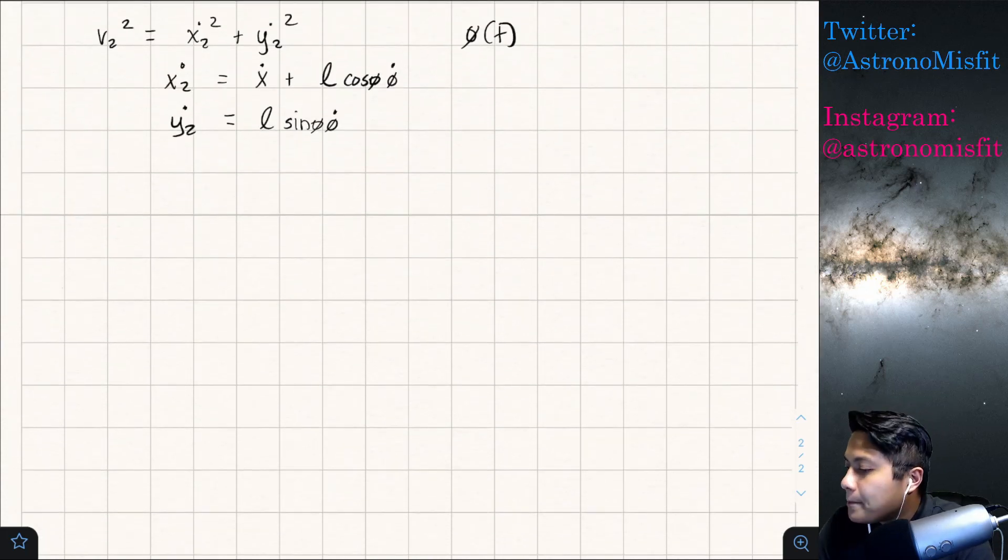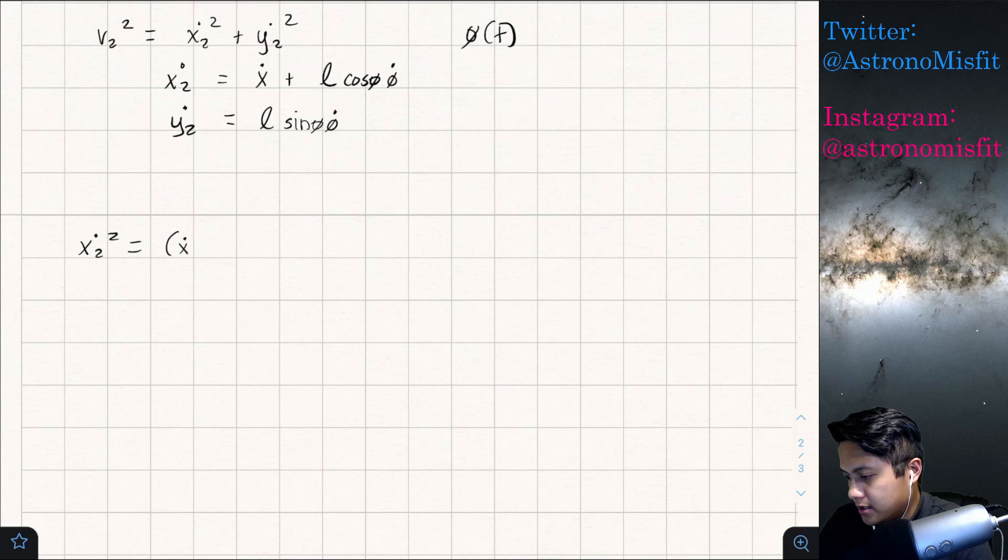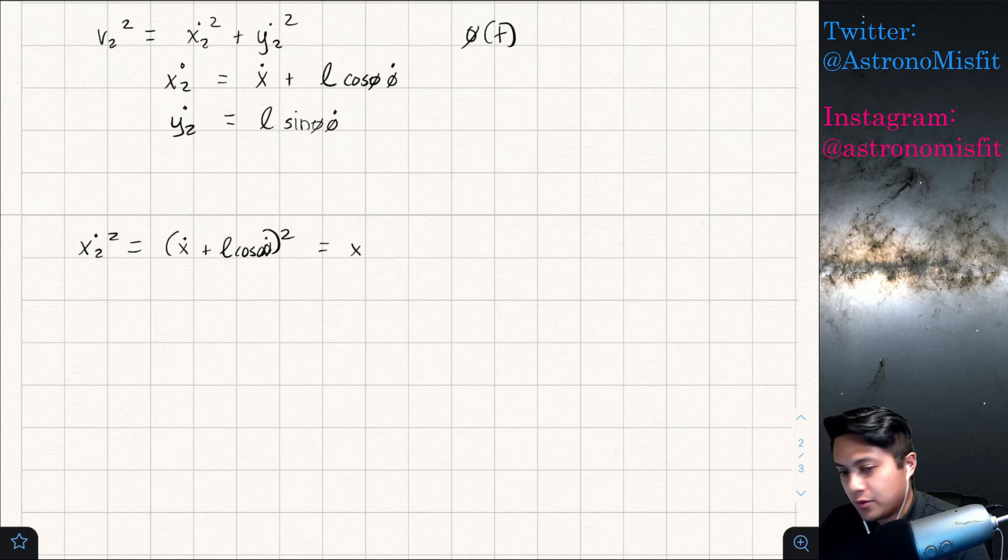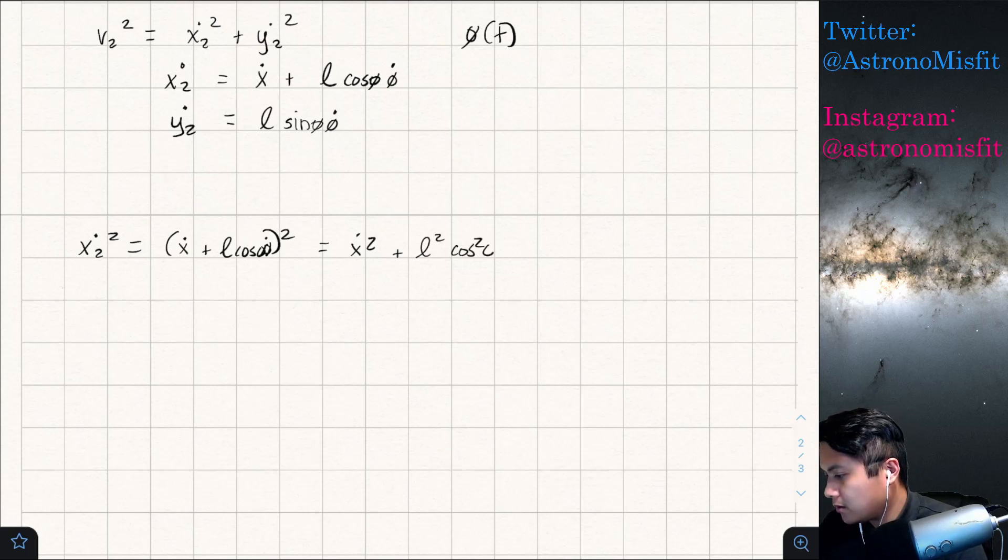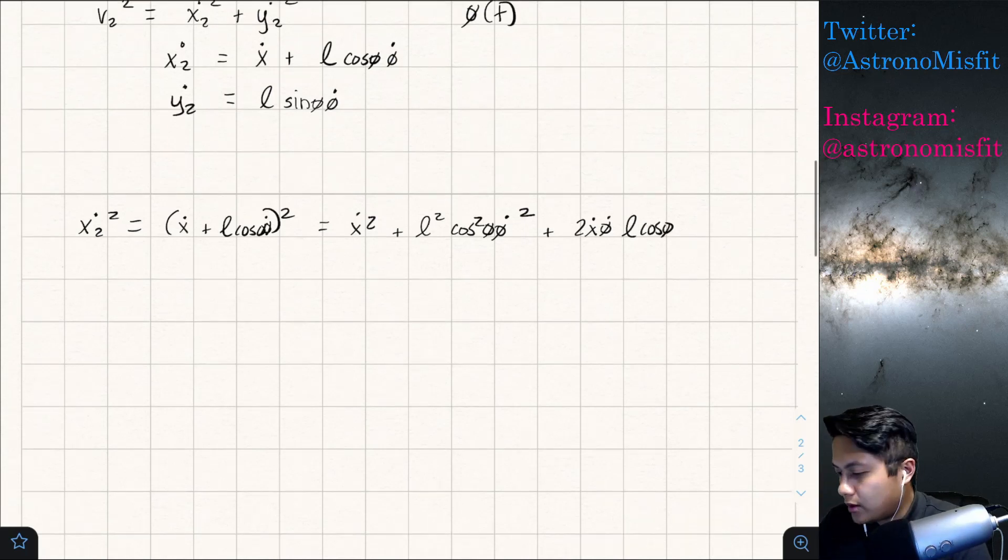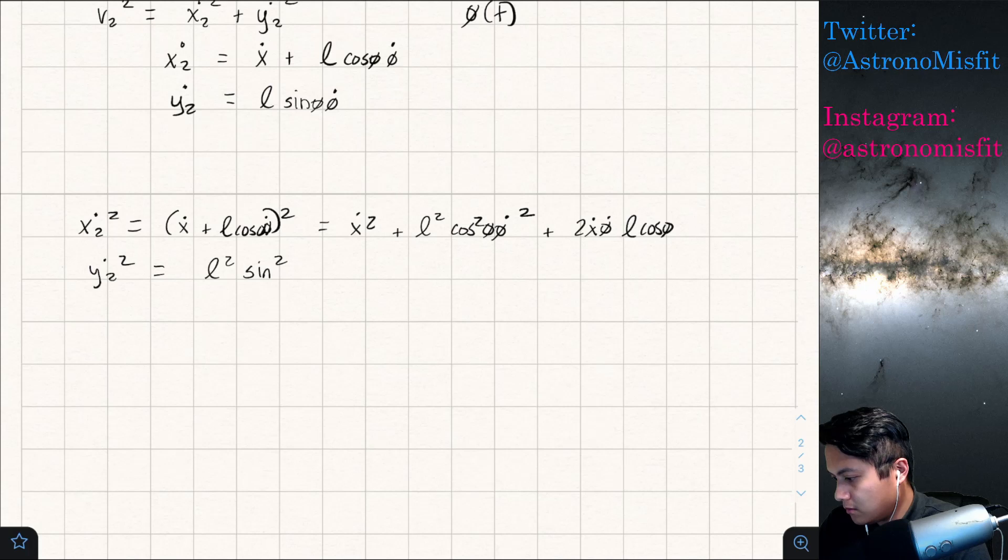And so if we squared them, let's do some squaring. x2 dot squared is just x dot plus l cosine phi, phi dot squared. And then plus a 2 x dot phi dot l cosine phi. And we have y2 dot squared is just equal to this.